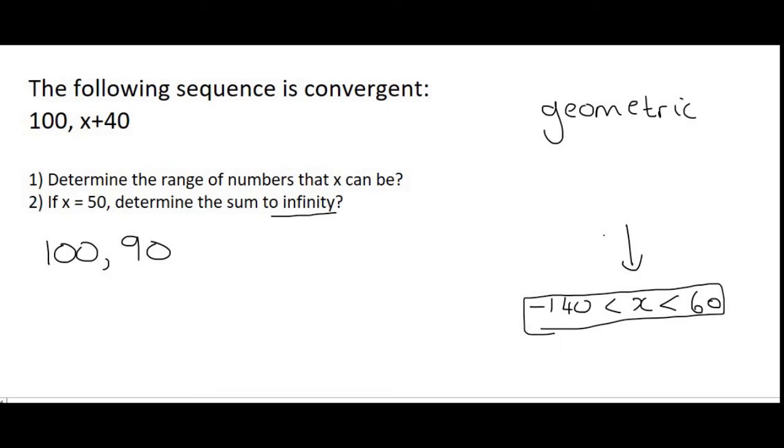Now the sum to infinity formula can only be used on a convergent sequence. But we know that it's convergent because we just found the x values that would make it convergent. And that's between minus 140 and 60.